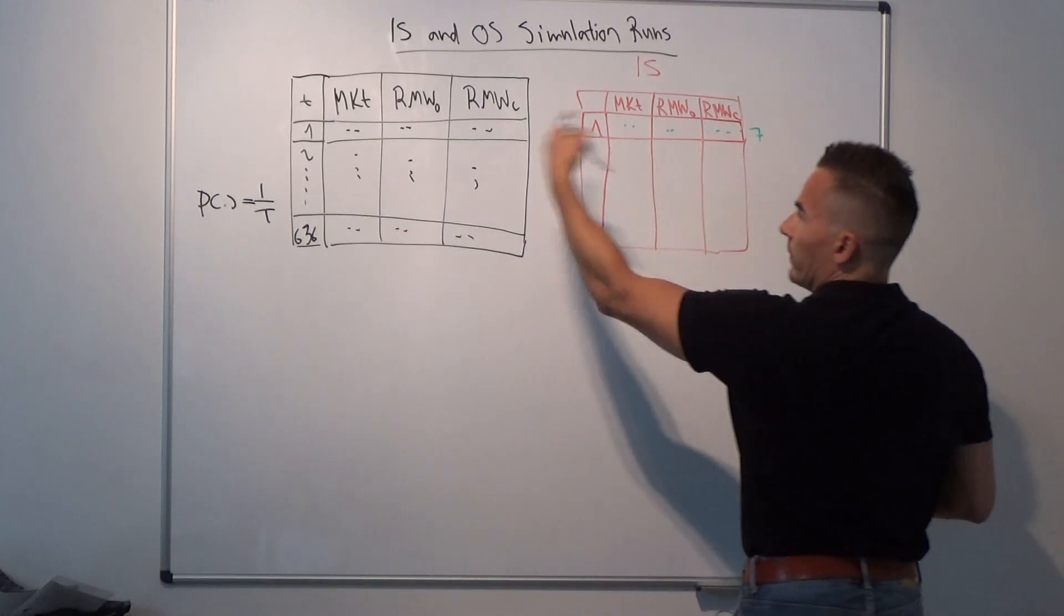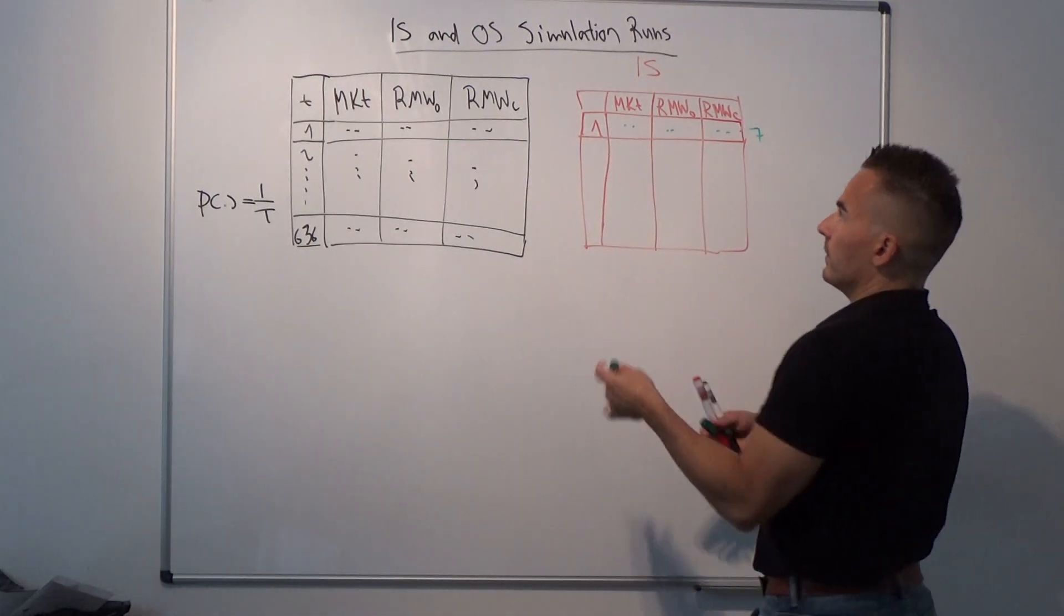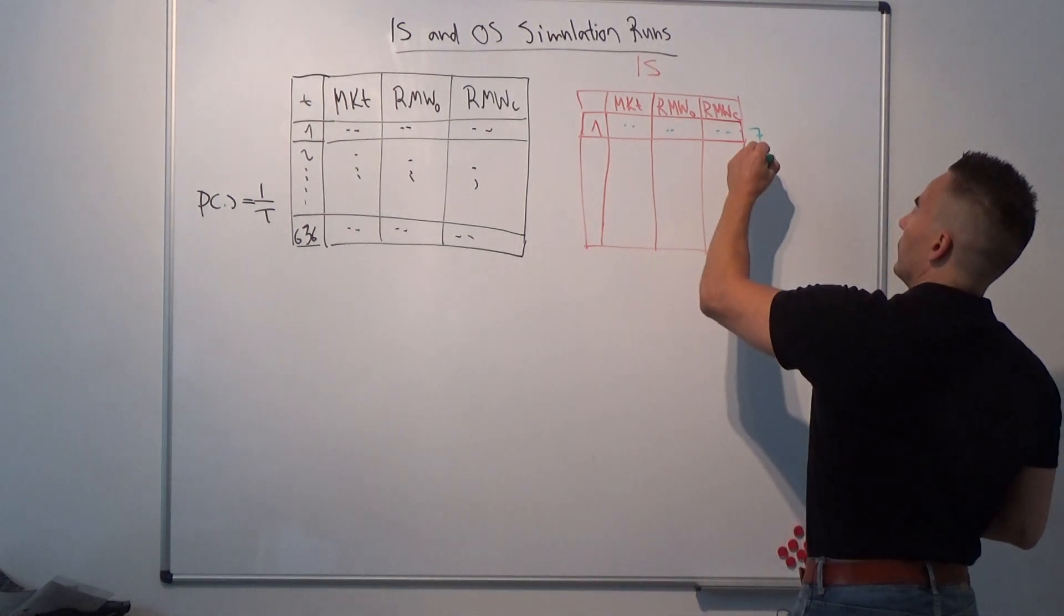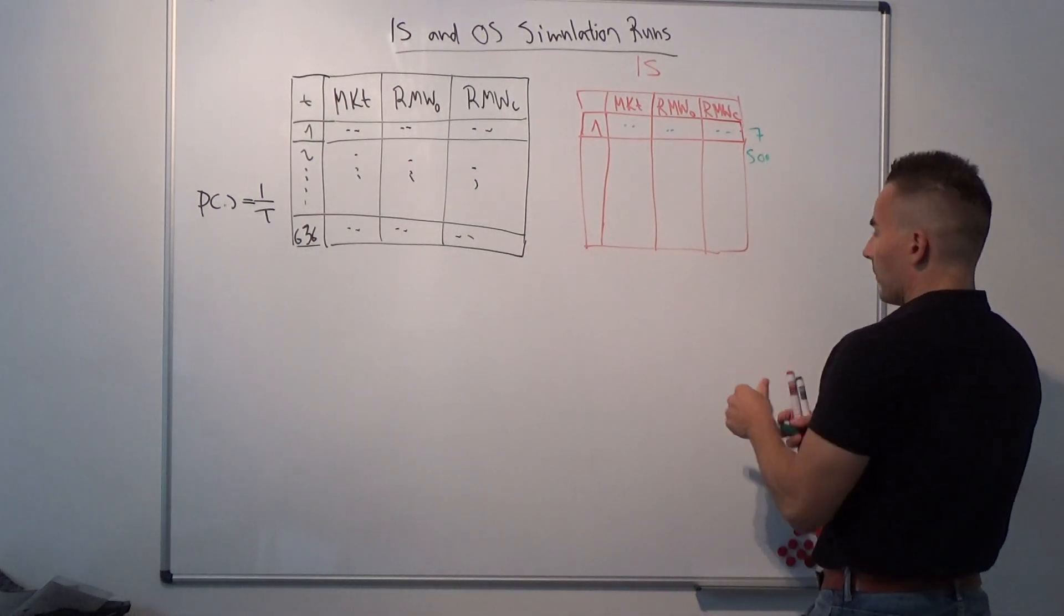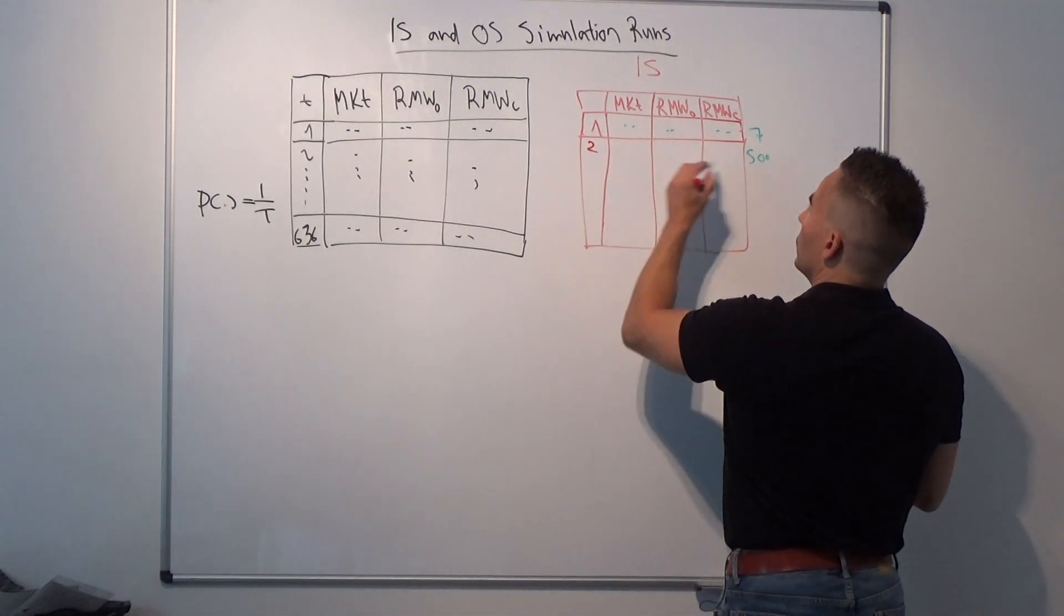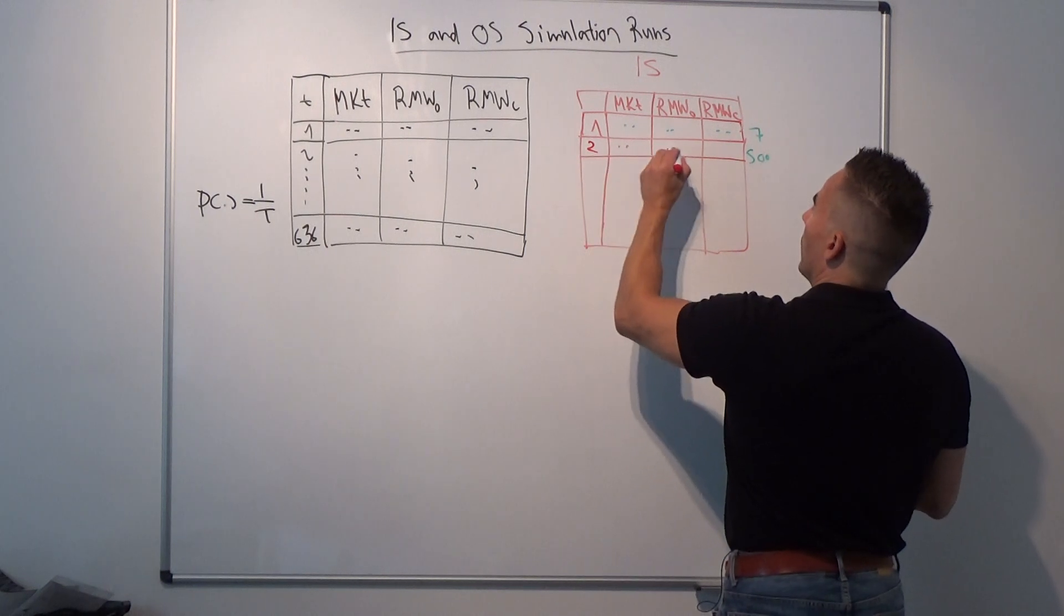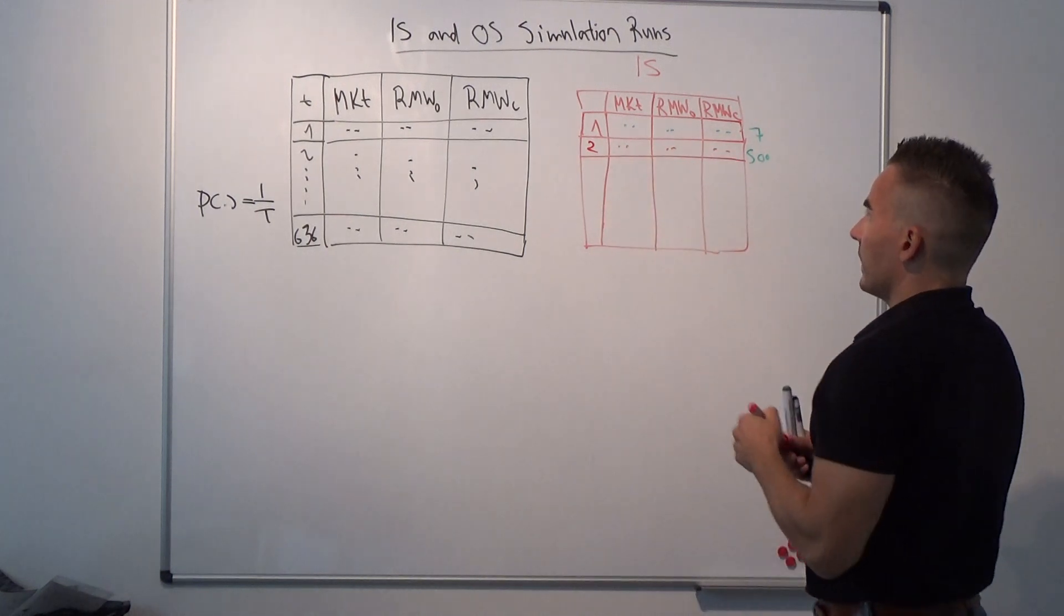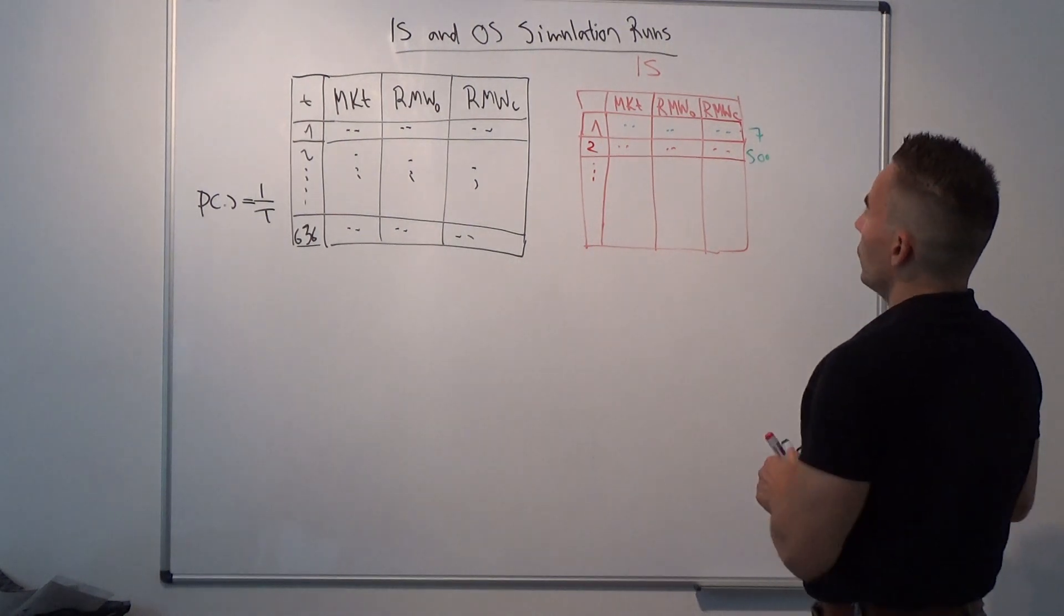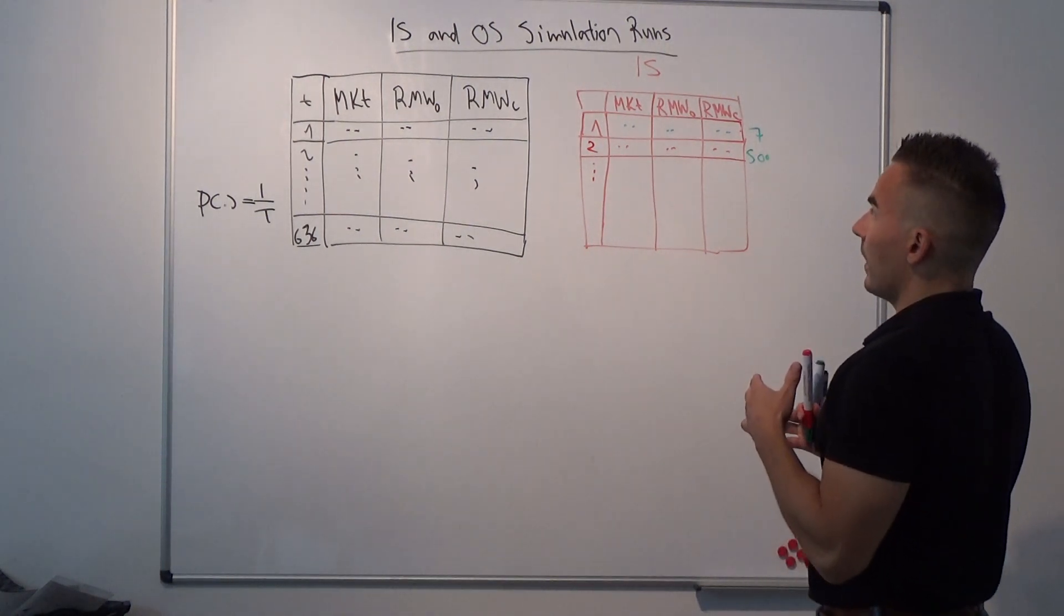We remember that it's the seventh row from the original data sample. In the next round maybe we take row number 500. This becomes row number 2 in our in-sample data matrix and so on.